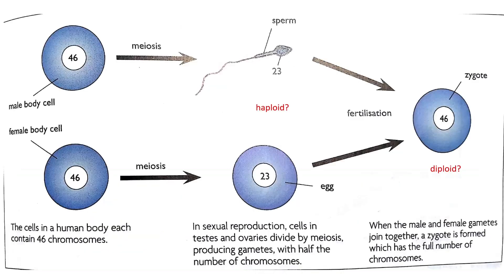In terms of chromosomes, male and female body cells each have 23 chromosomes. The sperm cell and the egg cell are called haploids and they divide by meiosis. Once fertilized, it becomes a zygote. The zygote therefore has 46 chromosomes — 23 from the male and 23 from the female — forming a diploid.